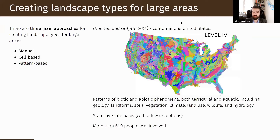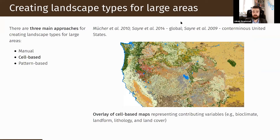Currently we have three main approaches to create landscape types. The first one is manual delineations. Manual delineations are usually of high quality, but this approach uses a lot of data, requires a lot of resources, and many people need to be involved in those kinds of delineations.